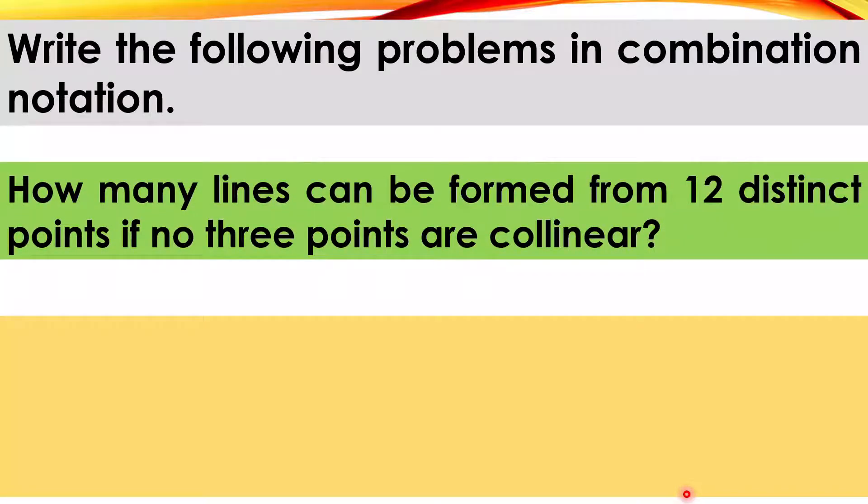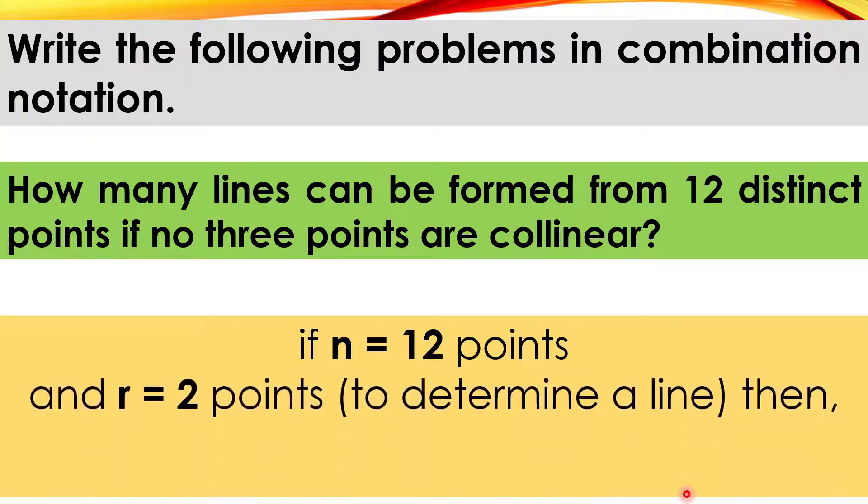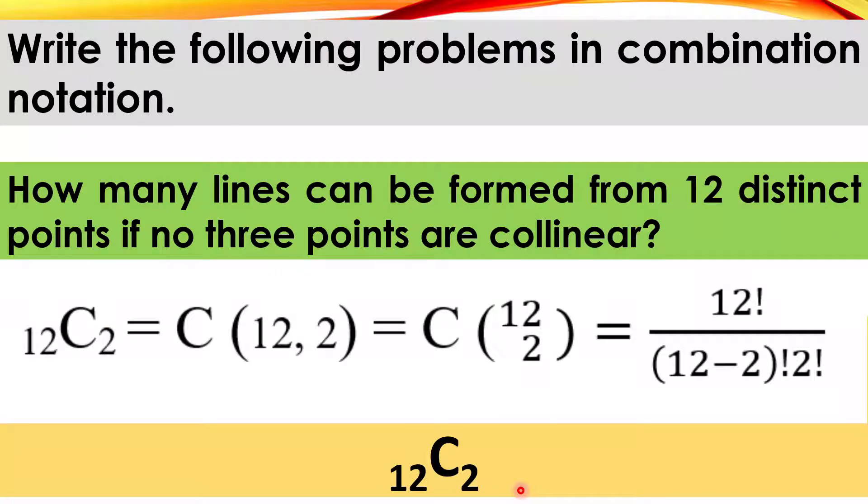For number 2, how many lines can be formed from 12 distinct points and no 3 points are collinear? So, we have n is equal to 12 points and r is equal to 2 points to determine a line. So, 2 points kasi makakapag-determine ka na na line. Therefore, the answer is this. Okay? Or pwede rin yung sinabi ko kanina. Ganito, pwede rin siya isulat.